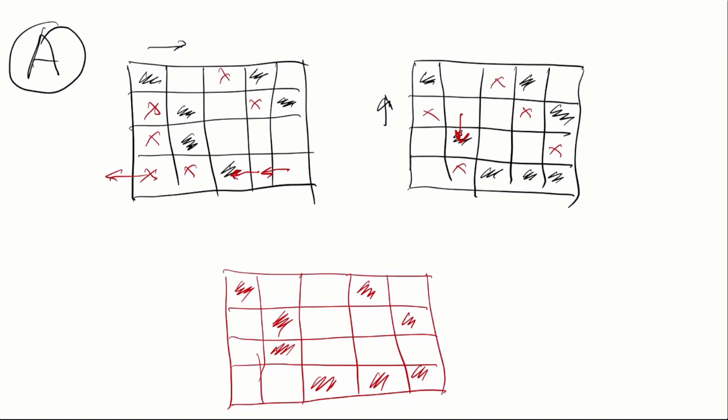After we do all of that, which can be done in linear time by breadth-first search or depth-first search algorithm, we have some points which surely exist, some points which surely don't exist, and some points we don't know.